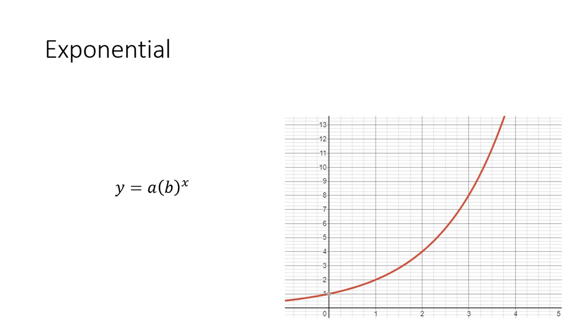Last one is your exponential, which is y equals a times b to the x, and that just has a constant growth. Either a constant growth or a constant decay. So as the x increases, it should keep getting larger, and as the x decreases, it should keep getting smaller, or the reverse. If the x keeps decreasing, it gets larger, it gets smaller.